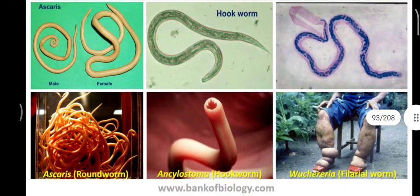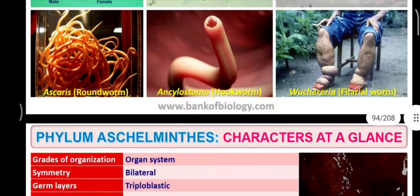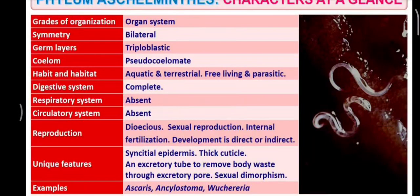Here you can see Ascaris male and female, hookworm, and the filarial worm — how Wuchereria bancrofti causes filariasis — and Ancylostoma duodenale, and Ascaris lumbricoides. This is a complete overview of Aschelminthes. I hope you understood. Thank you.